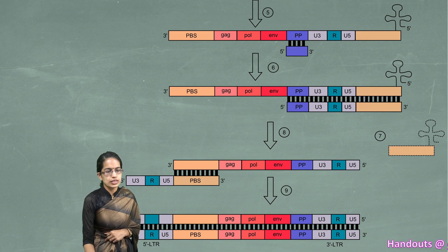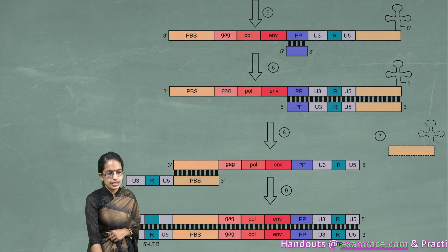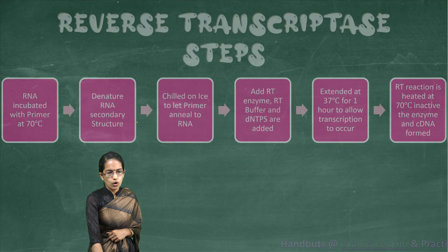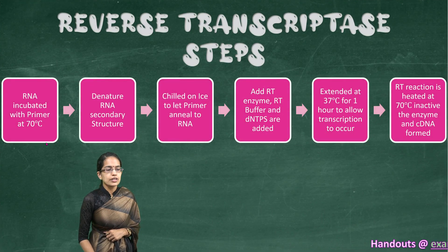So this sequence, when it runs, we can see that double-stranded DNA is obtained. Now let's dive into this process step by step.